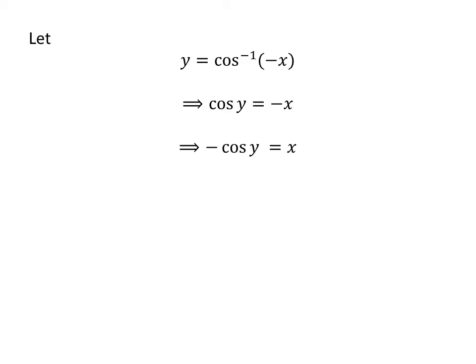Taking the minus sign to the left side of the equation, we get minus cosine of y equals x. As we know, the trigonometry identity minus cosine of y equals cosine of pi minus y.